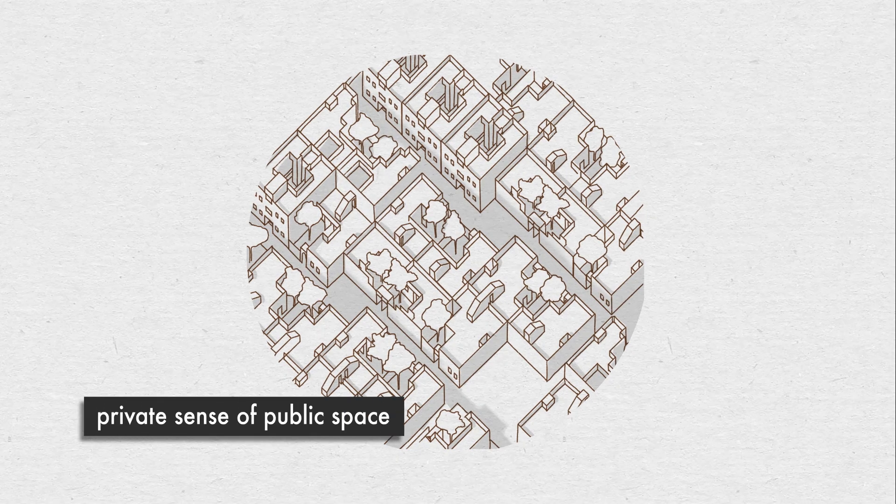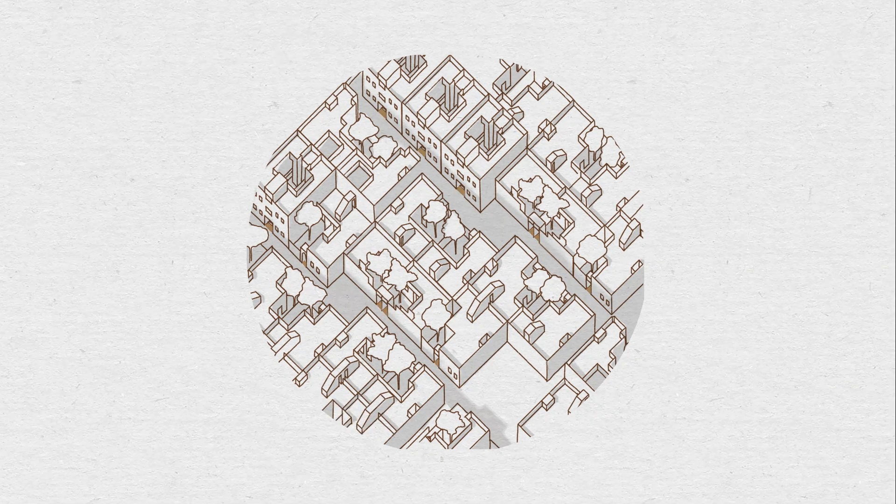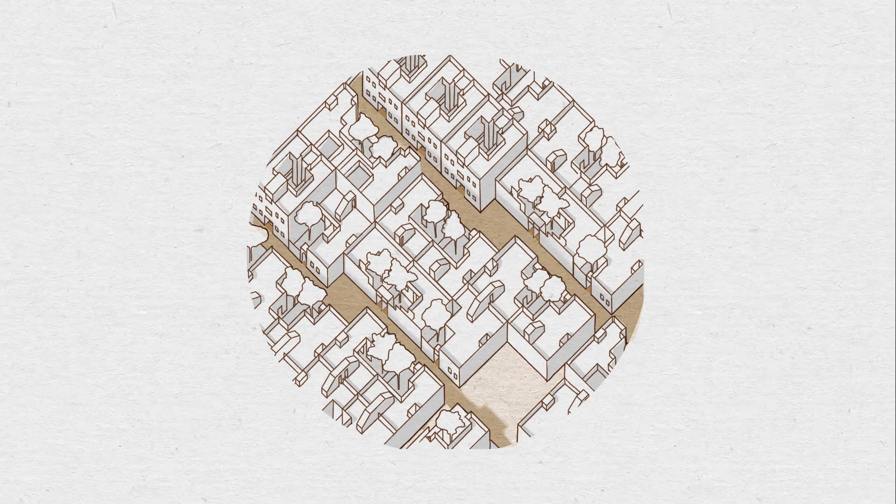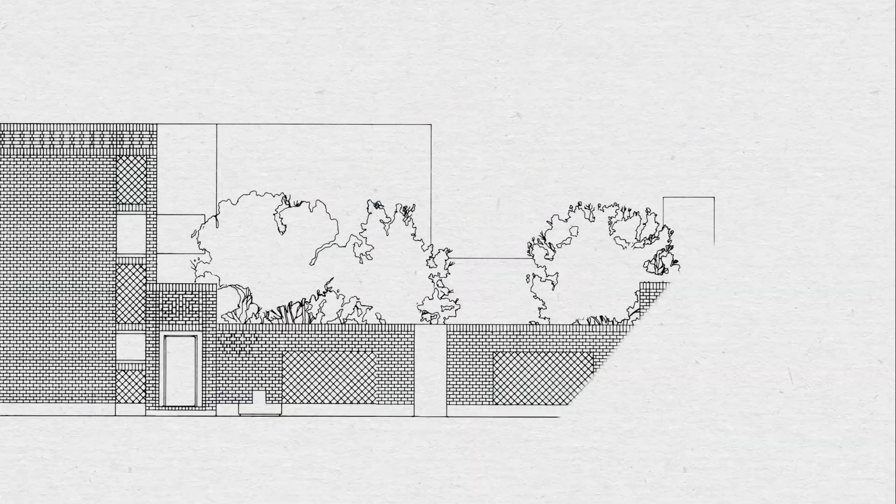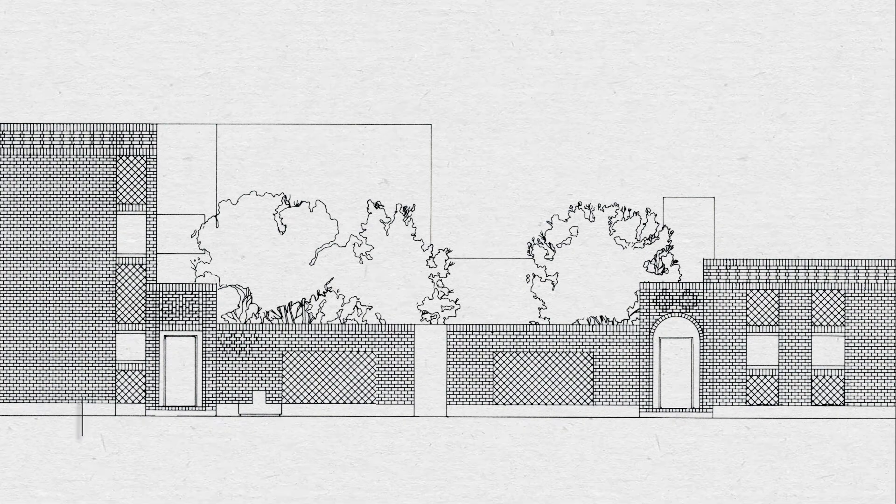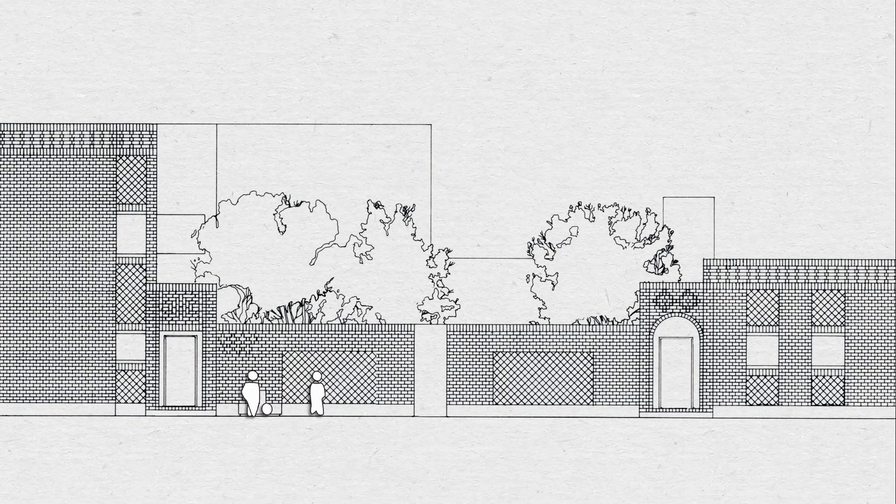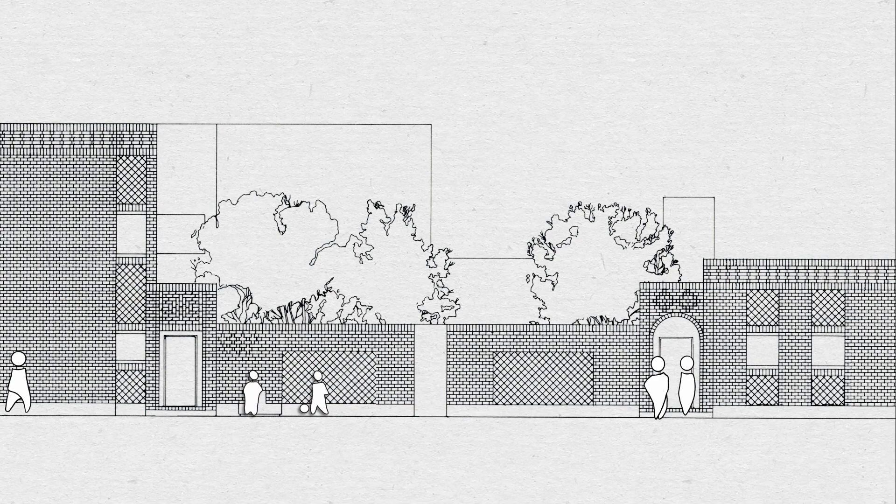A private sense of public space is created in front of the dwellings where the houses literally meet the street. This realm is the intermediate space between private and public, and can be seen as an extension of the dwelling, where children play and parents chat and interact with neighbours.